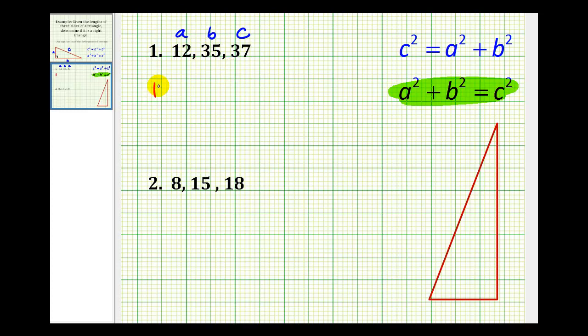So we want to see if 12 squared plus 35 squared does equal 37 squared. If it does, it's a right triangle. If it doesn't, it's not a right triangle. So 12 squared equals 144, 35 squared equals 1,225, and 37 squared is equal to 1,369.